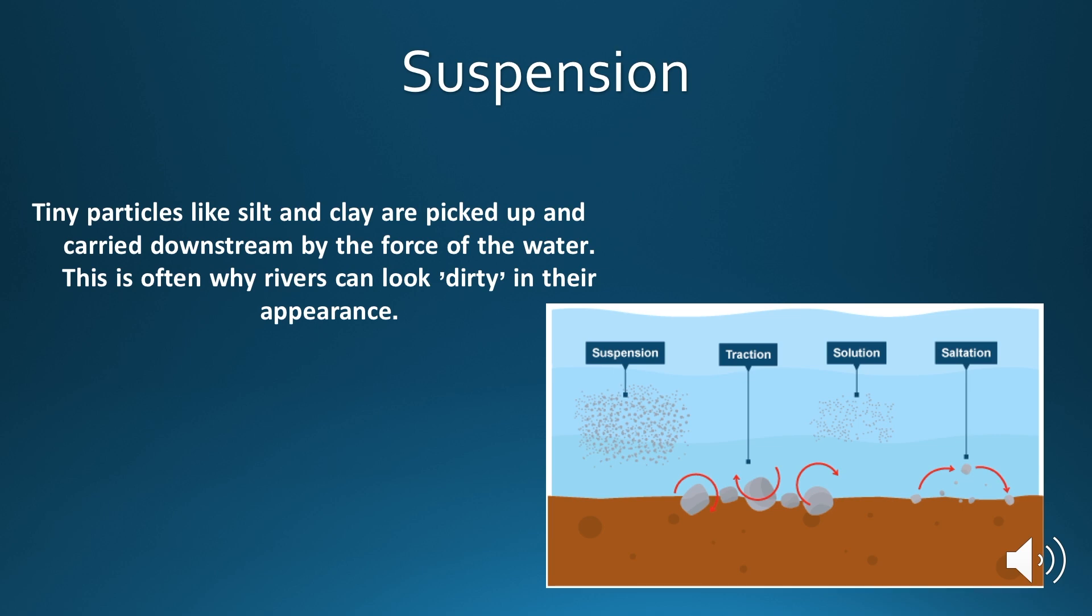Third is suspension. Suspension involves very small particles, like silt and clay, that are carried along and suspended within the water. These particles are much lighter, and therefore the river has enough energy and strength to pick them up and carry them along. This process is often what makes a river look dirty in its appearance.